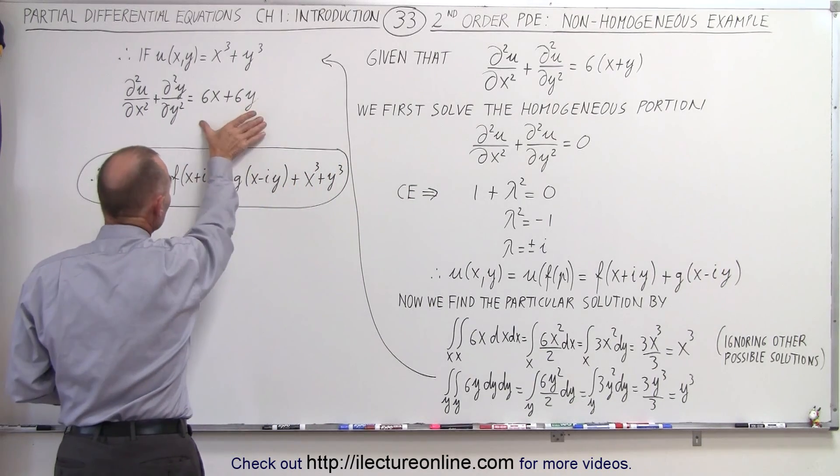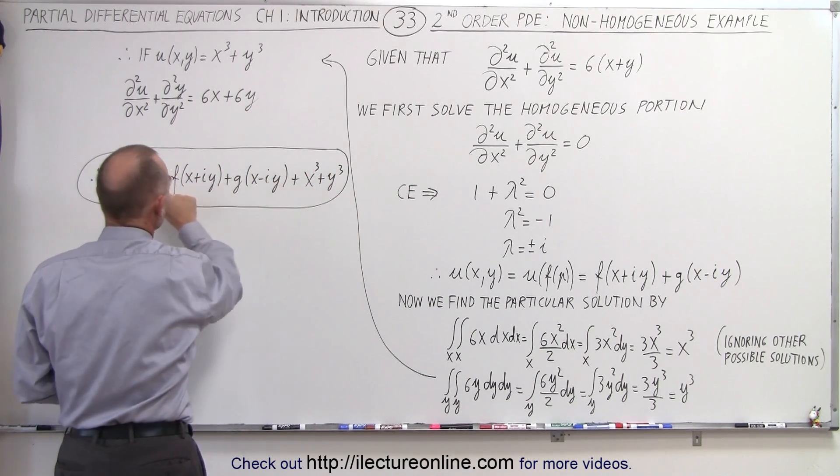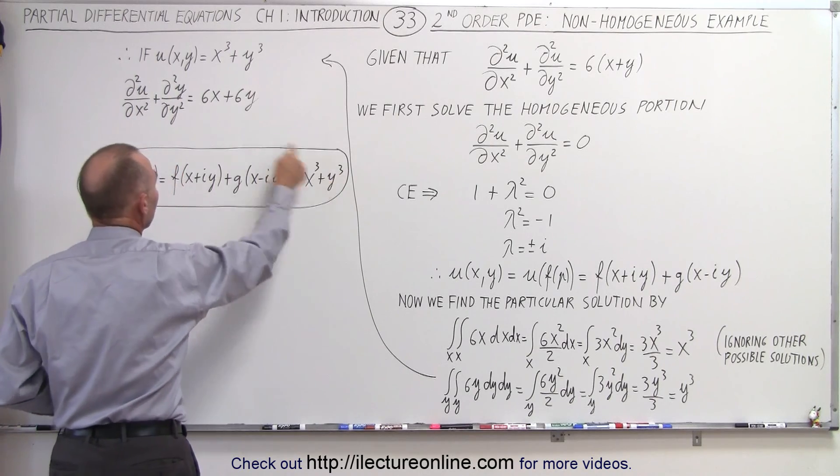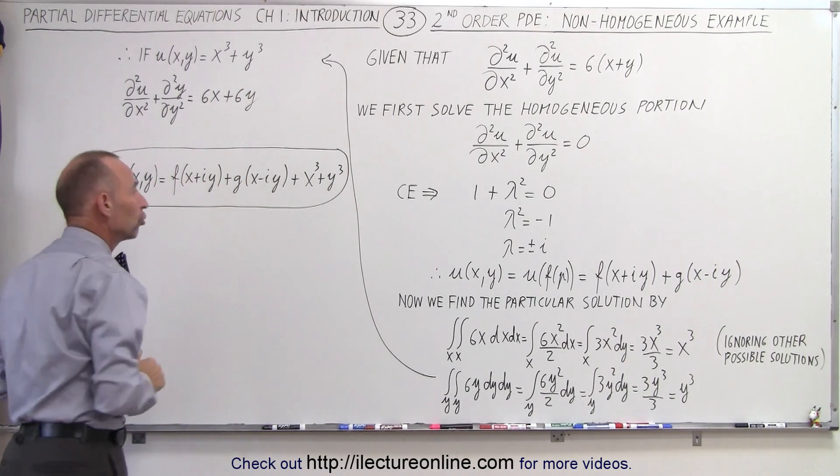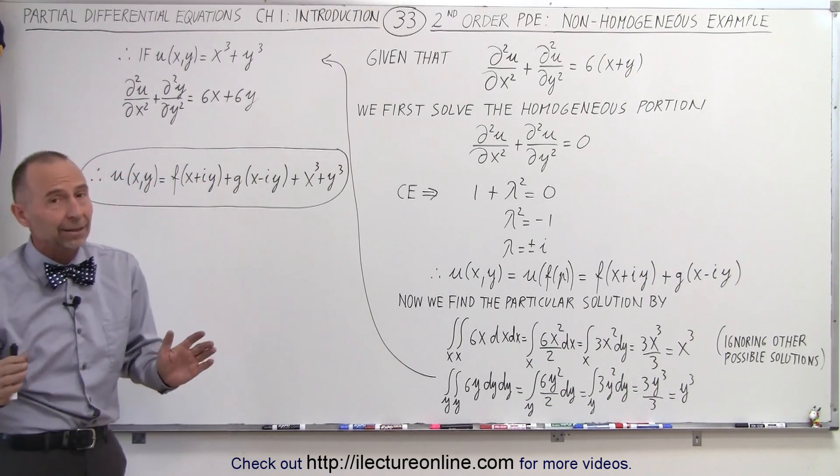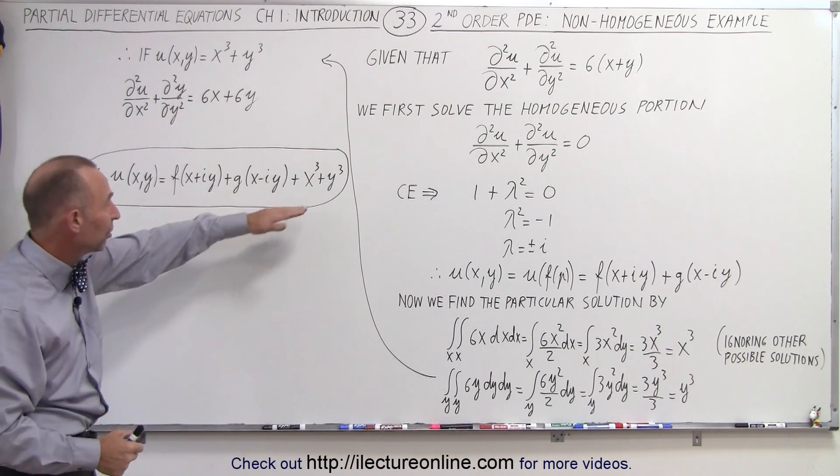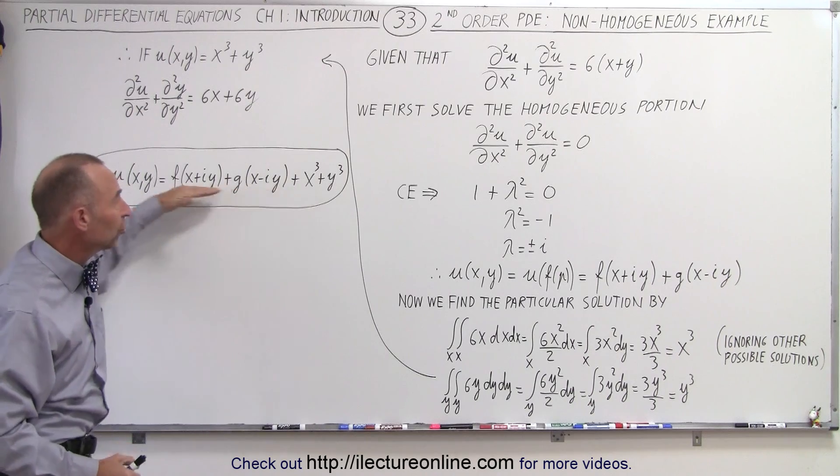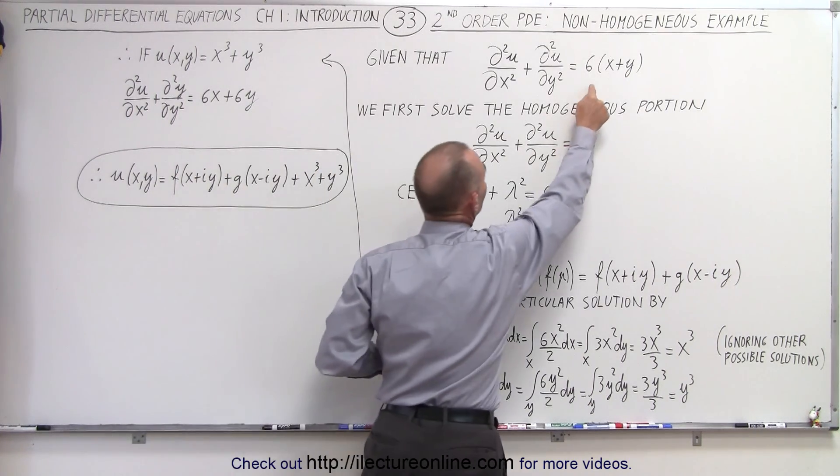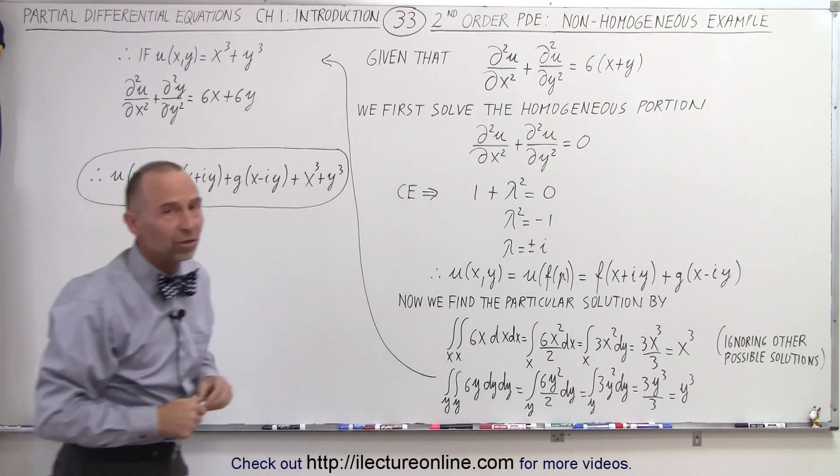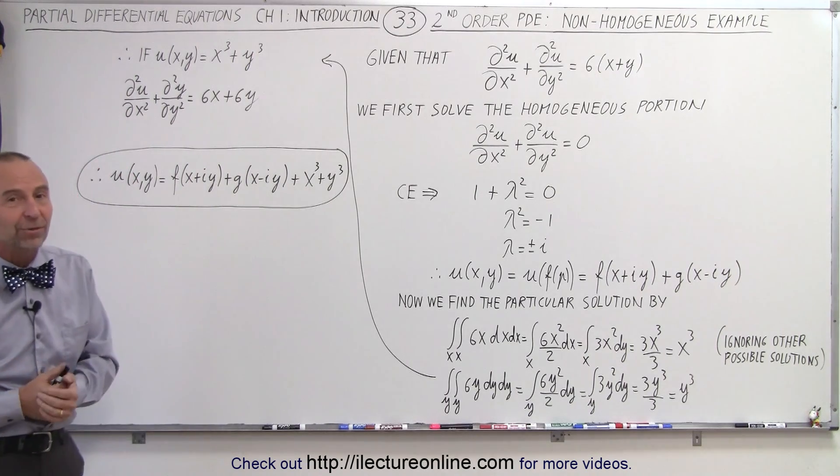We then say that's the particular solution, we add that to the general homogeneous solution, and together that forms the total solution of the function u. Again, there's an infinite number of other solutions we could have, but this is the simplest form of the solution that satisfies this non-homogeneous example. And that's how it's done.